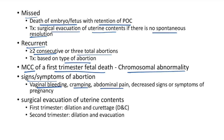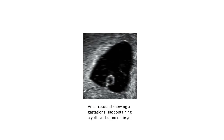Surgical evacuation can be done by dilatation and curettage (D&C) in the first trimester and dilatation and evacuation (D&E) in the second trimester. This picture shows an ultrasound containing a gestational sac with a yolk sac but no embryo — this is an anembryonic gestation, which will undergo spontaneous abortion.